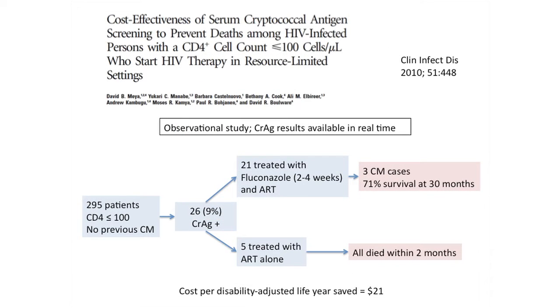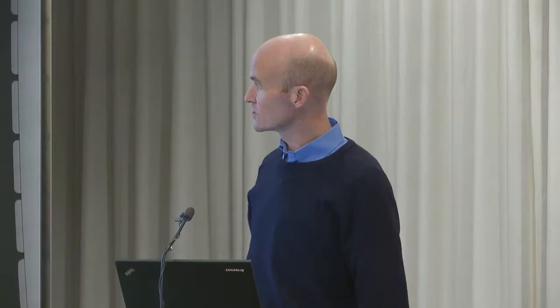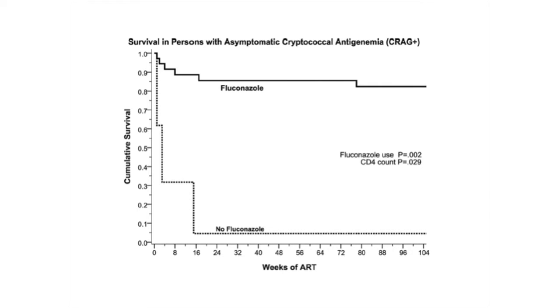What about treating the antigenemia? There are no randomized controlled trials. Observational data from Uganda showed that in a study where 9% of patients were antigen positive, of 26 patients, 21 were treated with fluconazole and 5 with ART alone. All of those treated with ART alone died, and there was better survival in those treated with fluconazole plus ART. Admittedly a very small study prone to biases, but it does suggest benefit from fluconazole in preventing cryptococcal disease.